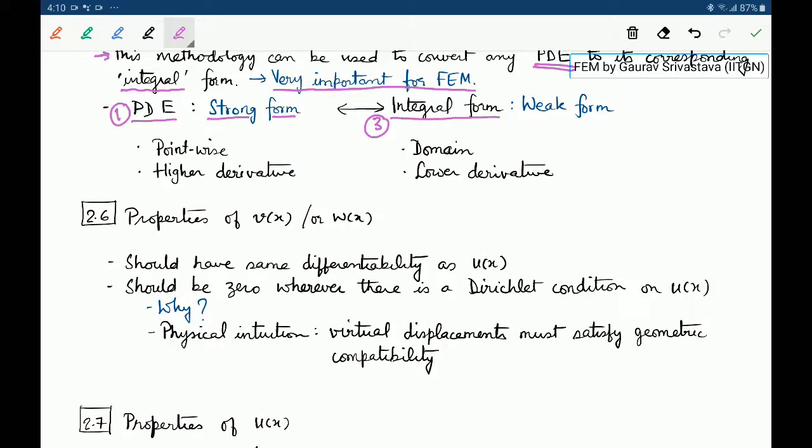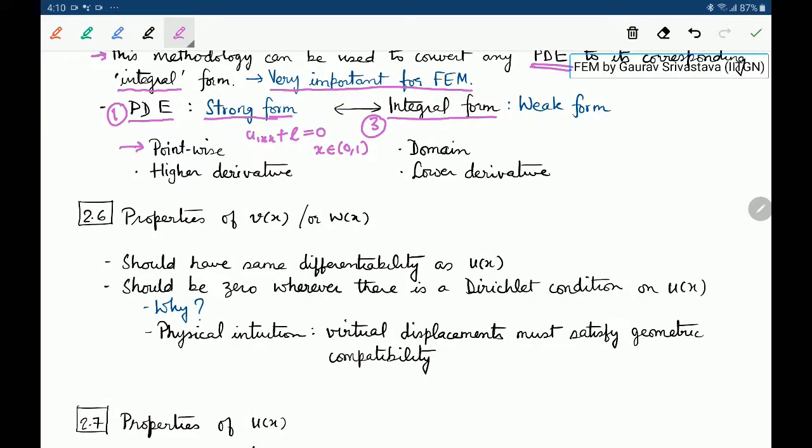A couple of reasons for this nomenclature of strong and weak comes from the following: the strong form, u_xx plus l equals 0, is a pointwise requirement which means if this is valid for x between 0 to 1, at each point between 0 and 1 this relation should hold.